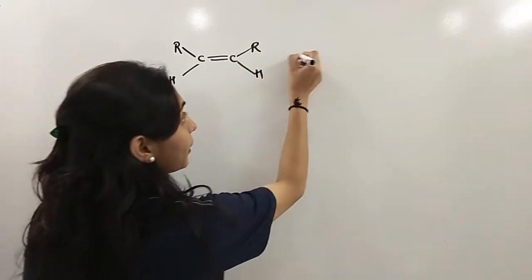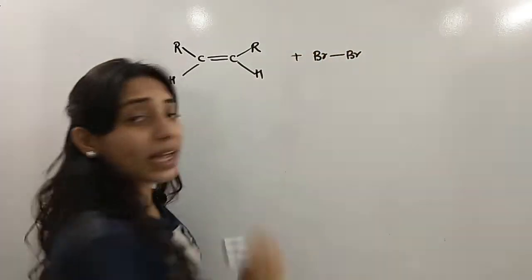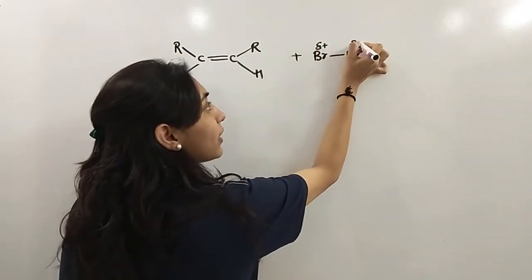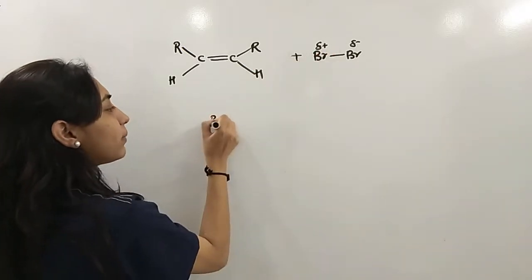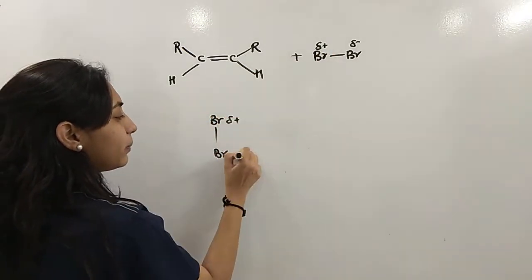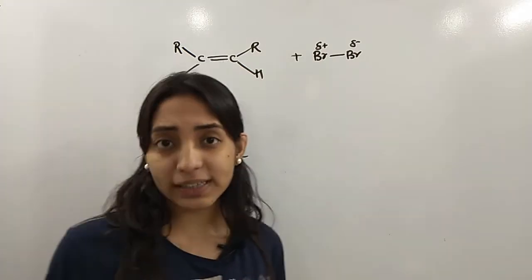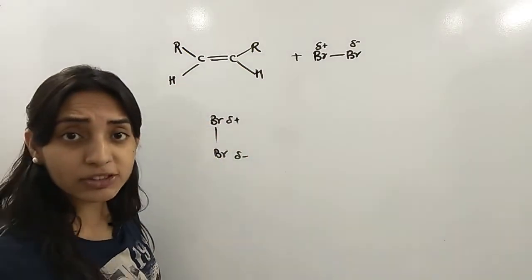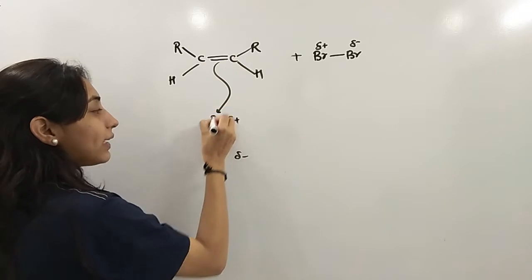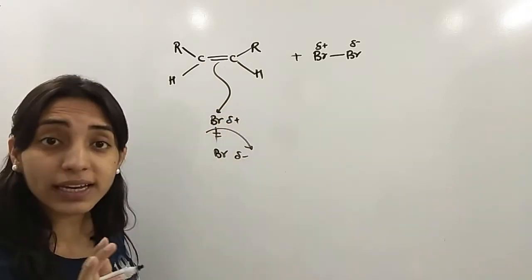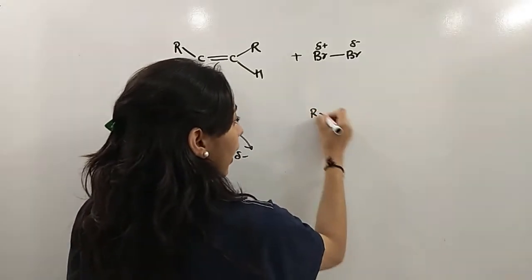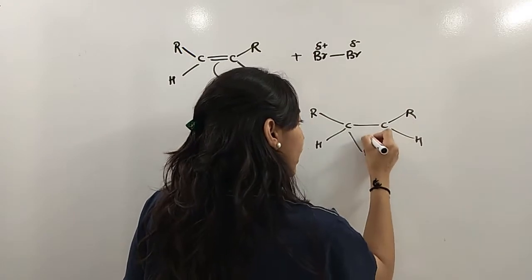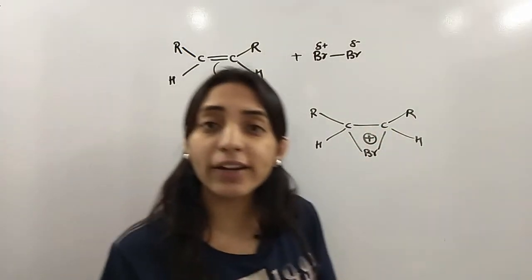Imagine I have to react this with Br₂. For the Br₂ reaction, what is the mechanism? First of all, put Br as delta-plus and Br as delta-minus. In books, we generally represent it this way. We say we will attack from the electron-rich species to the electron-deficient species. The double bond attacks on Br(δ+), and this Br will take its electrons.